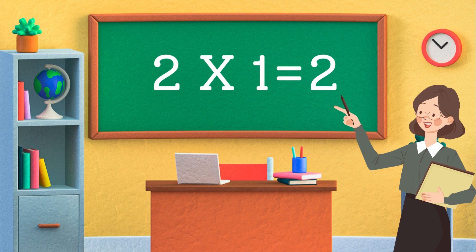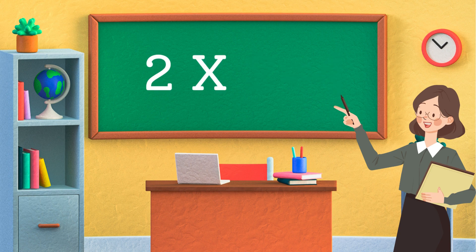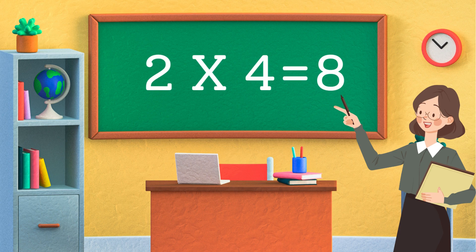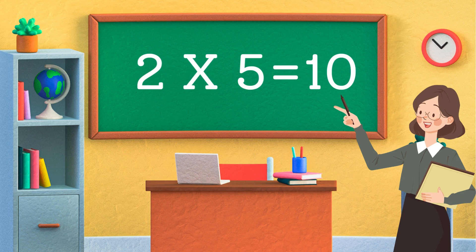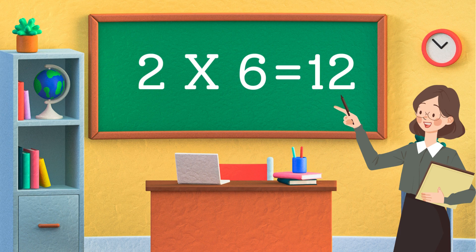Two ones are two. Two twos are four. Two threes are six. Two fours are eight. Two fives are ten. Two sixes are twelve.